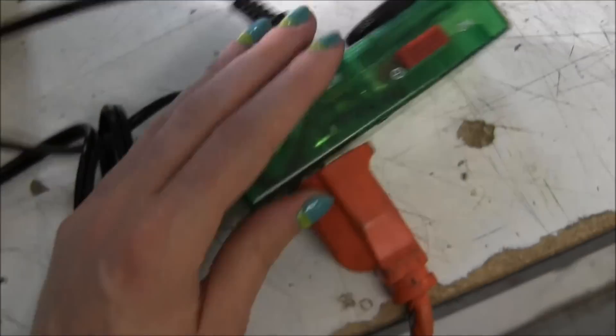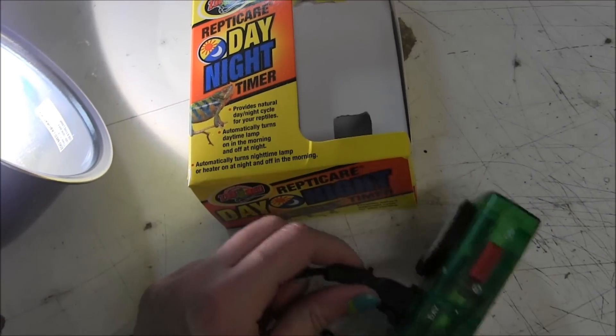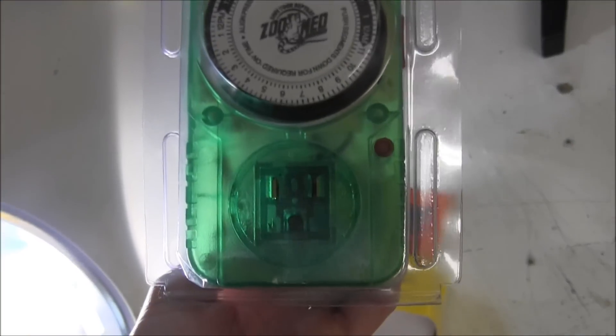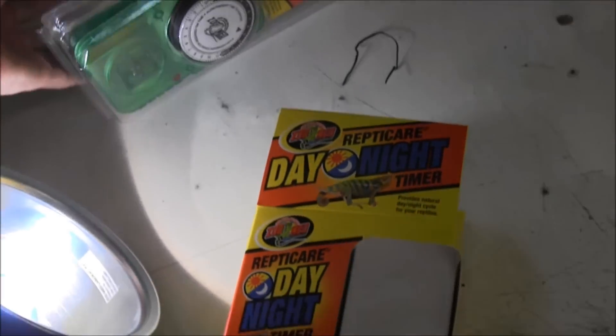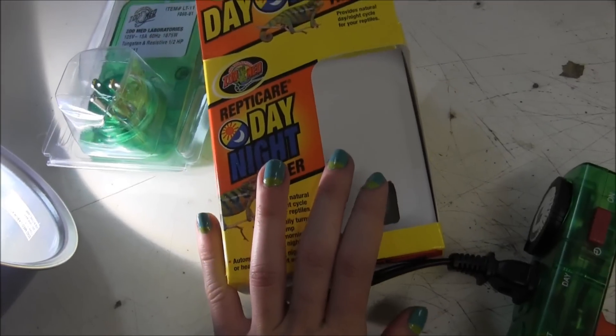Hopefully that helped you out. If you want to order the Zoo Med Reptitimer, or if you want to try any of our other timers, including for example this one which is just one outlet timer, you can visit our website at www.lllreptile.com, where we have these and all of our available products for sale.